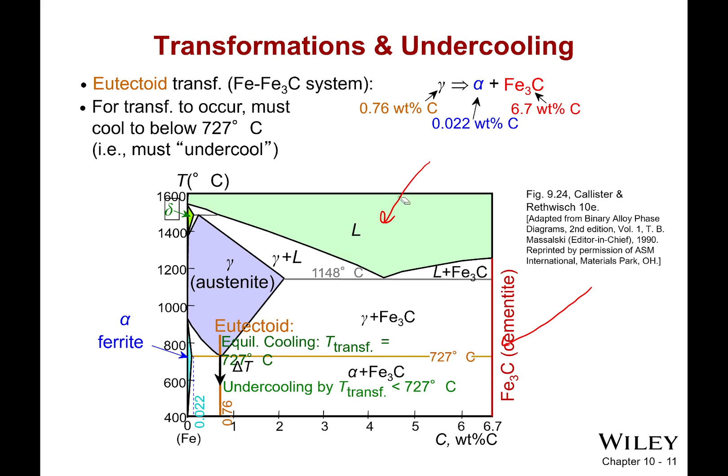Okay, so there we go, we have all this. As a note, this is percent weight carbon on the bottom. As you can see, it only gets up to 6.7, and that's where the cementite—as we have that material compound formed between iron and carbon.